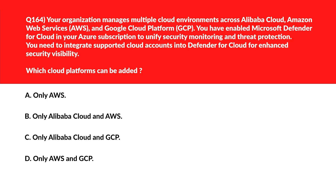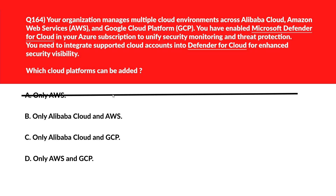Let's look at option A — AC is only AWS. Defender supports more than just AWS, hence incorrect. Moving to options B and C together: both contain Alibaba Cloud, and Alibaba Cloud is not supported in Defender for Cloud, so B and C are definitely out.